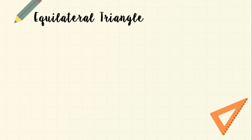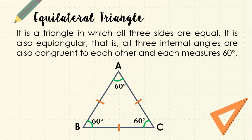Now let us have the equilateral triangle. It is a triangle in which all three sides are equal. It is also equiangular — that is, all three internal angles are congruent to each other and each measures 60 degrees. Triangle ABC is an equilateral triangle since it has three equal sides and three internal angles that are congruent, each measuring 60 degrees.